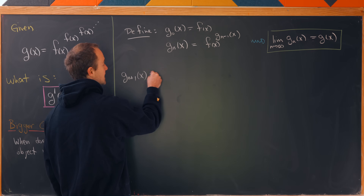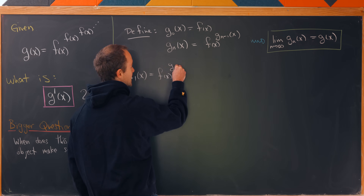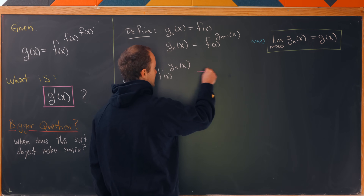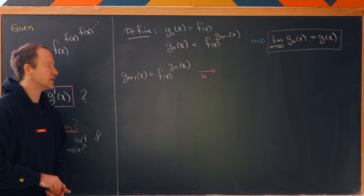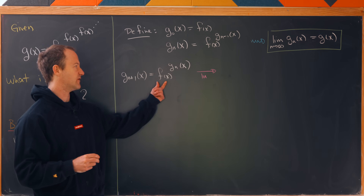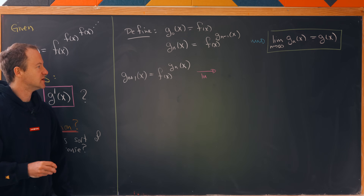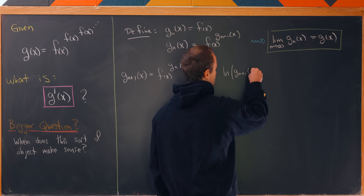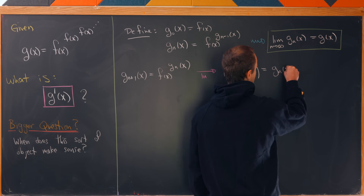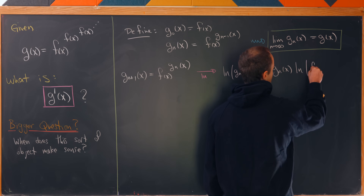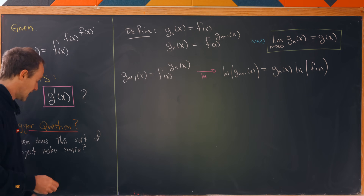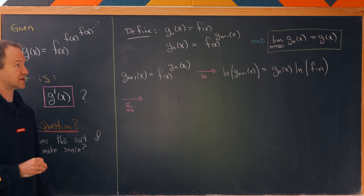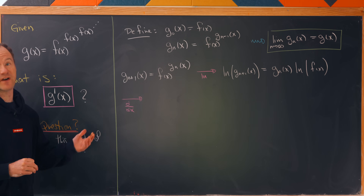Instead of that recursion, I'll use the shifted form: g_{n+1} of x equals f of x to the g_n of x. To calculate the derivative here we'll use logarithmic differentiation — that's the general strategy when you have variables both in the base and the exponent. Taking the log of both sides gives: the natural log of g_{n+1}(x) equals g_n(x) times the natural log of f(x). Now let's take the derivative of both sides, which is valid because we have a finite power tower.